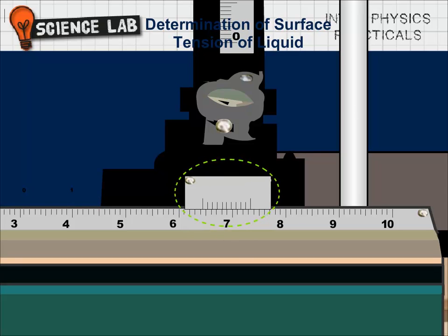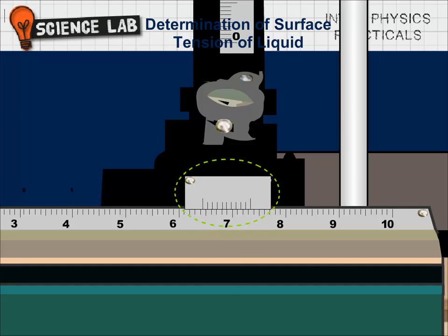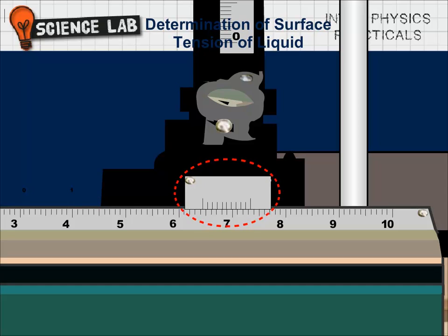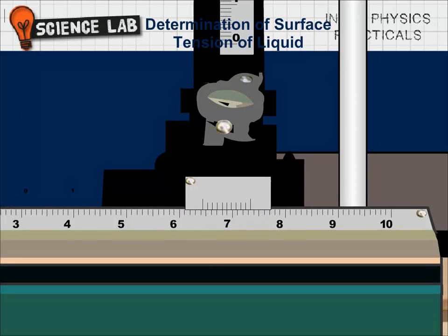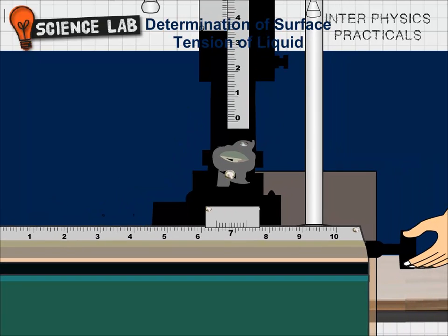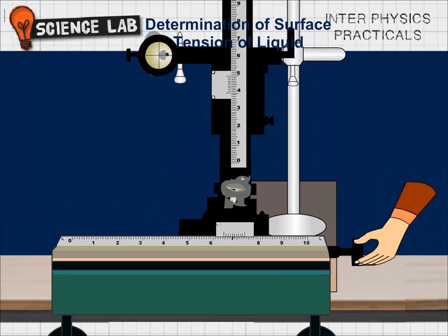Main scale reading MSR is equal to 6.4 cm. Vernier coincidence VC is equal to 4. Total reading TR R1 = MSR + VC × LC = 6.44 cm.